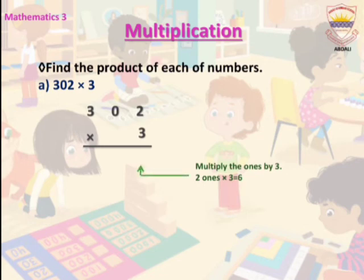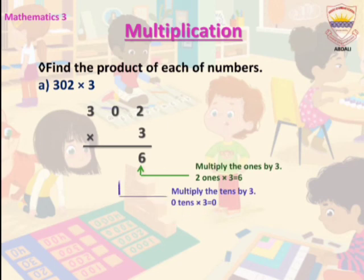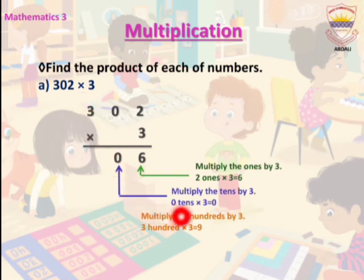2 ones multiplied by 3 equals 6. We write 6 at the 1's place. Now we multiply the 10's by 3. Zero is at the 10's place; 0 multiplied by 3 is 0. We write 0 at the 10's place.